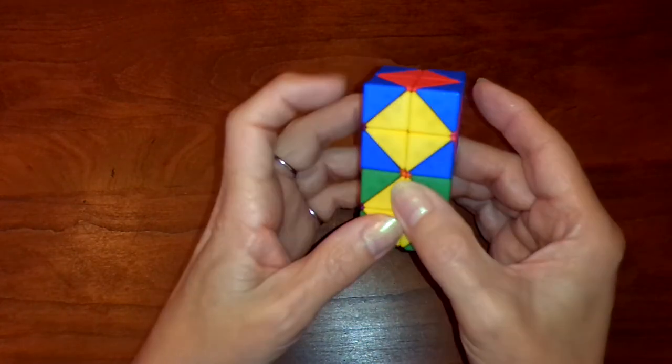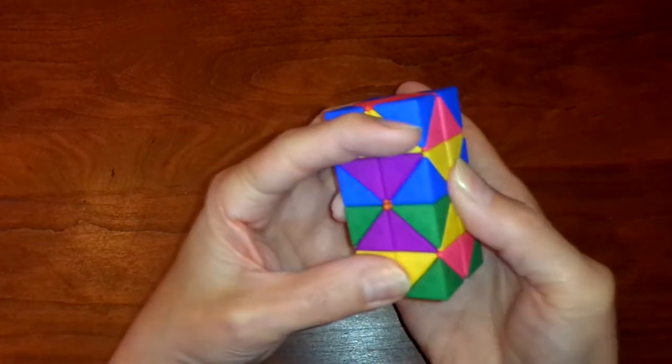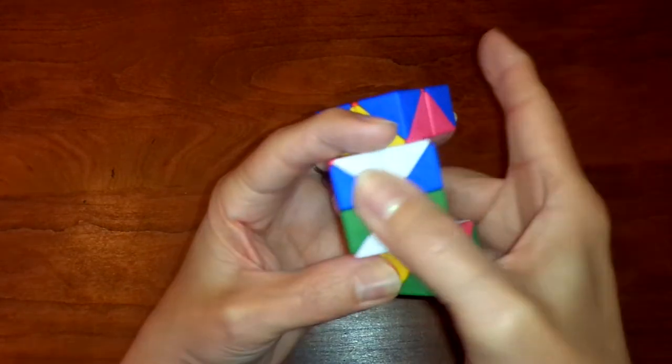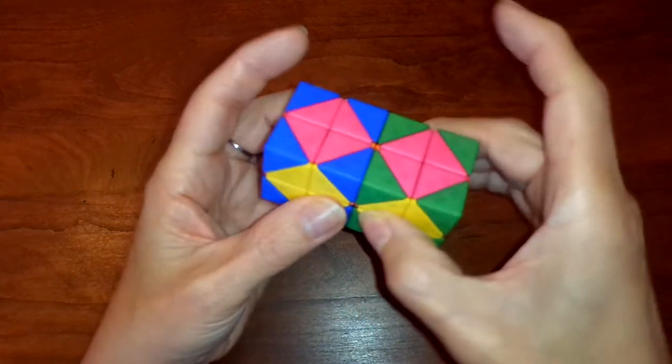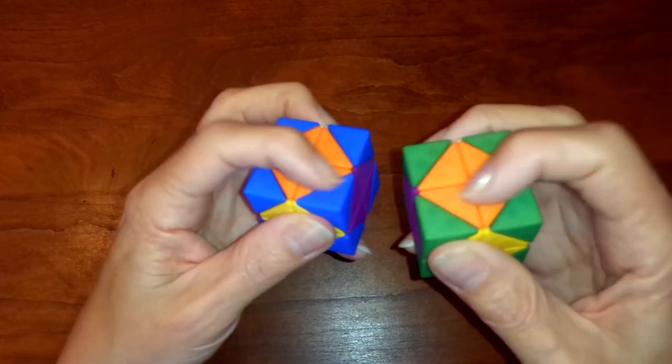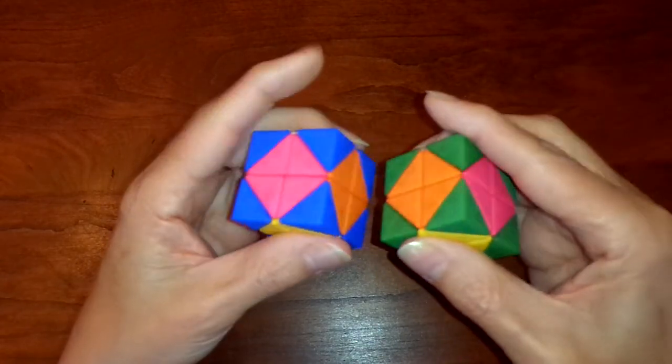Number four, axial twists of the central face. So these are actually twisting the central face, in this case the orange face.